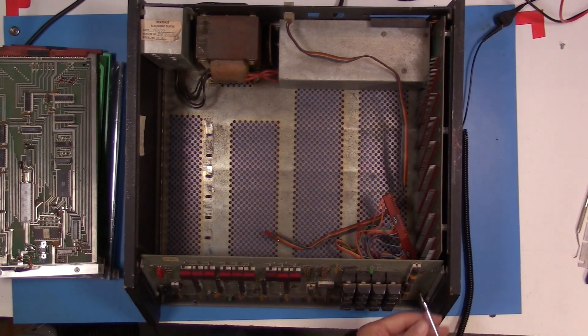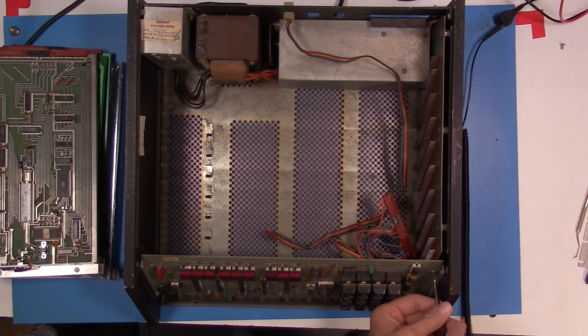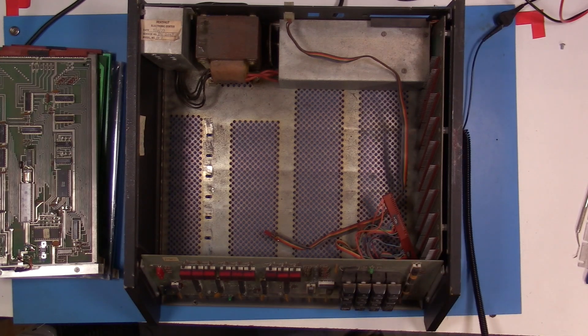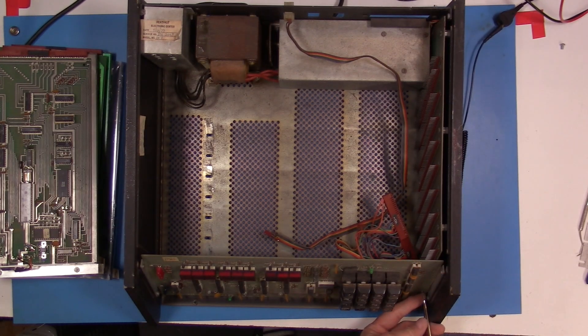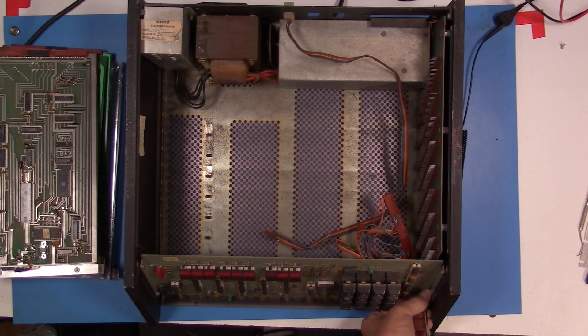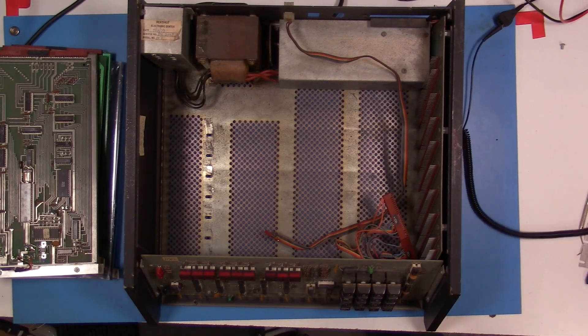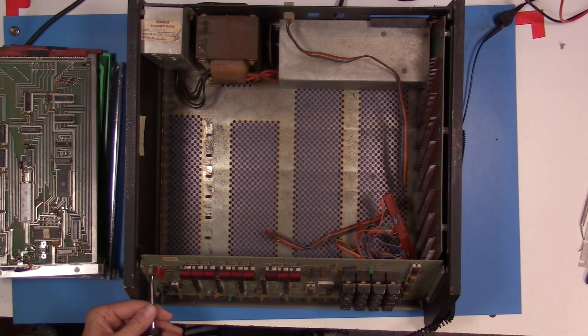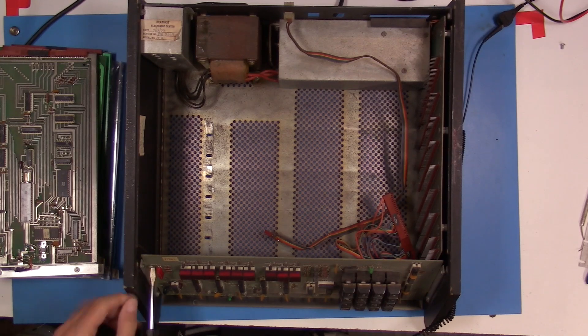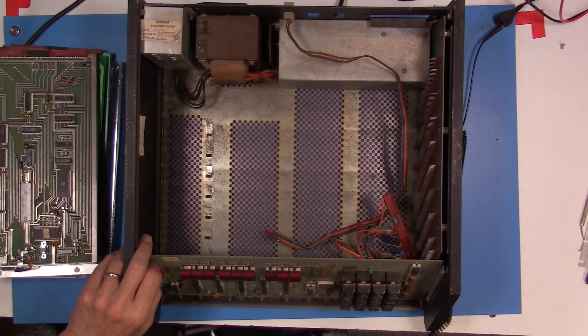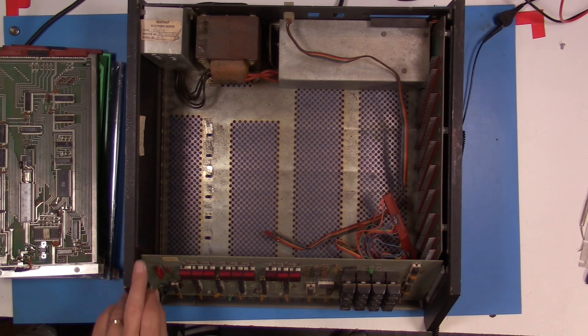One of the things that's kind of interesting too about this Heathkit computer is the fact that they used all slot head screws. And I guess that might just be a period thing for, you know, the mid to late 70s. I'm so used to seeing the Phillips head screws. And they're a lot easier to work with to get out, honestly.